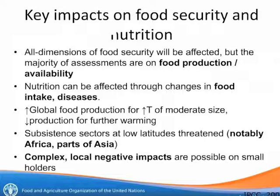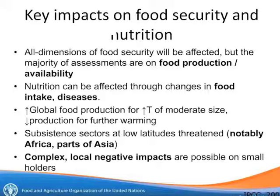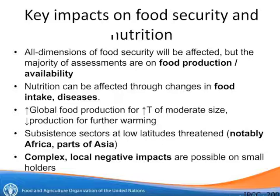Given these impacts and the channels through which agriculture sectors are affected, we can think about the impacts on food security and nutrition. There are four pillars of food security. Nutrition can be affected through changes in food intake and diseases. I want to stress that subsistence farmers, especially in the tropics and subtropics, will be most threatened — particularly in Africa and parts of Asia.